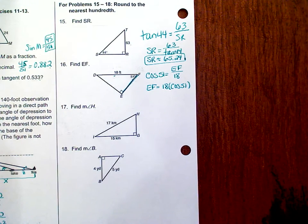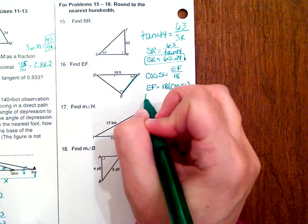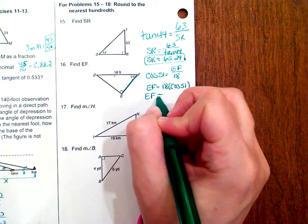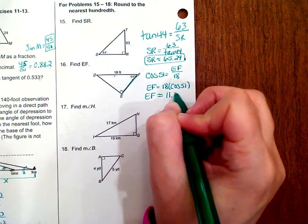So 18 times the cosine of 51, rounded to the nearest hundredth, EF is approximately equal to 11.33.